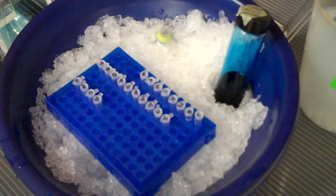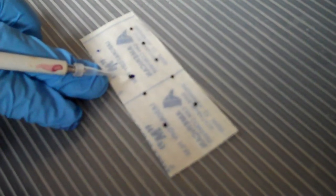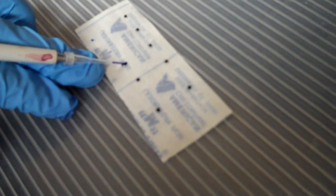Next, take two microliters of sample, load it into your pipette tip, and then mix it with the loading dye by pipetting.